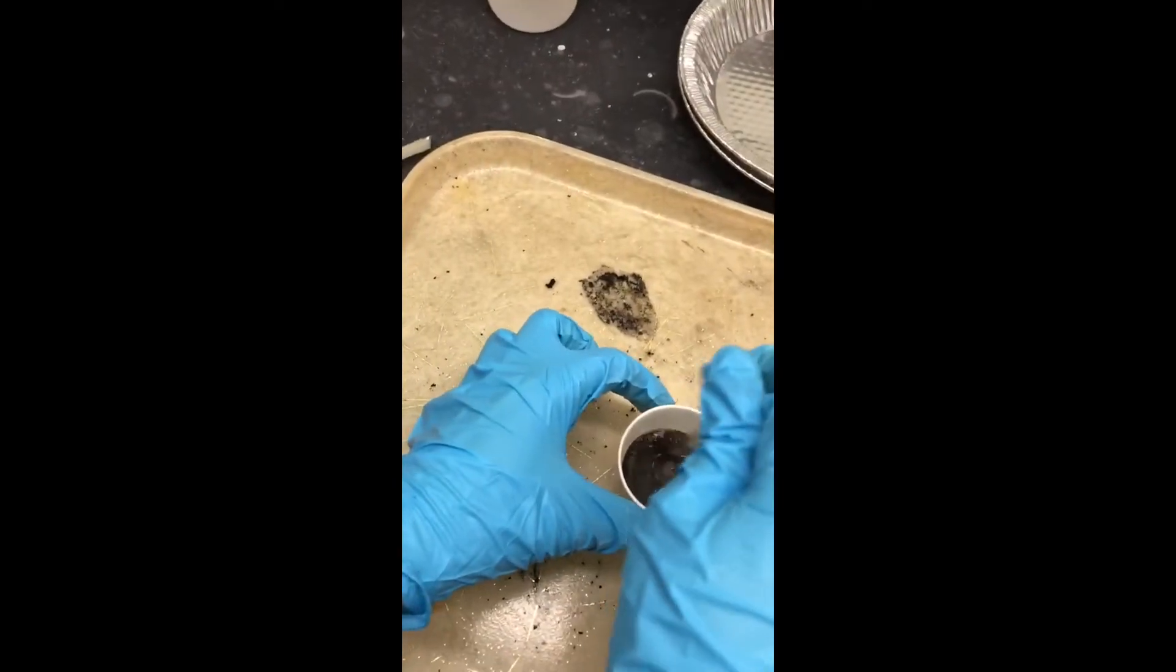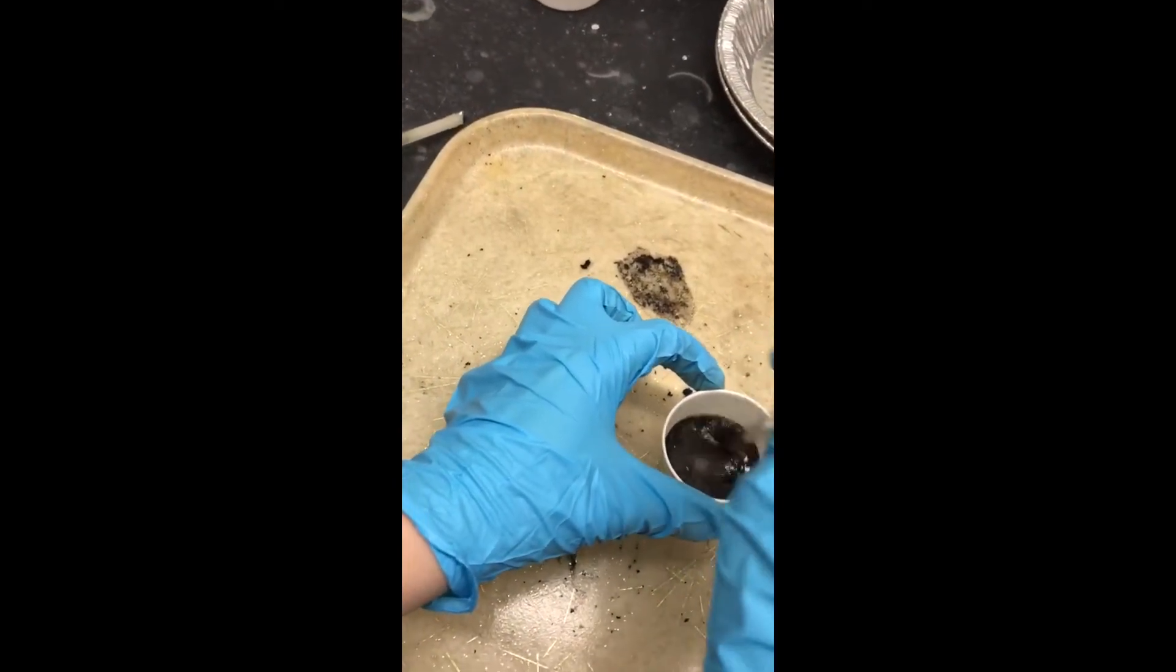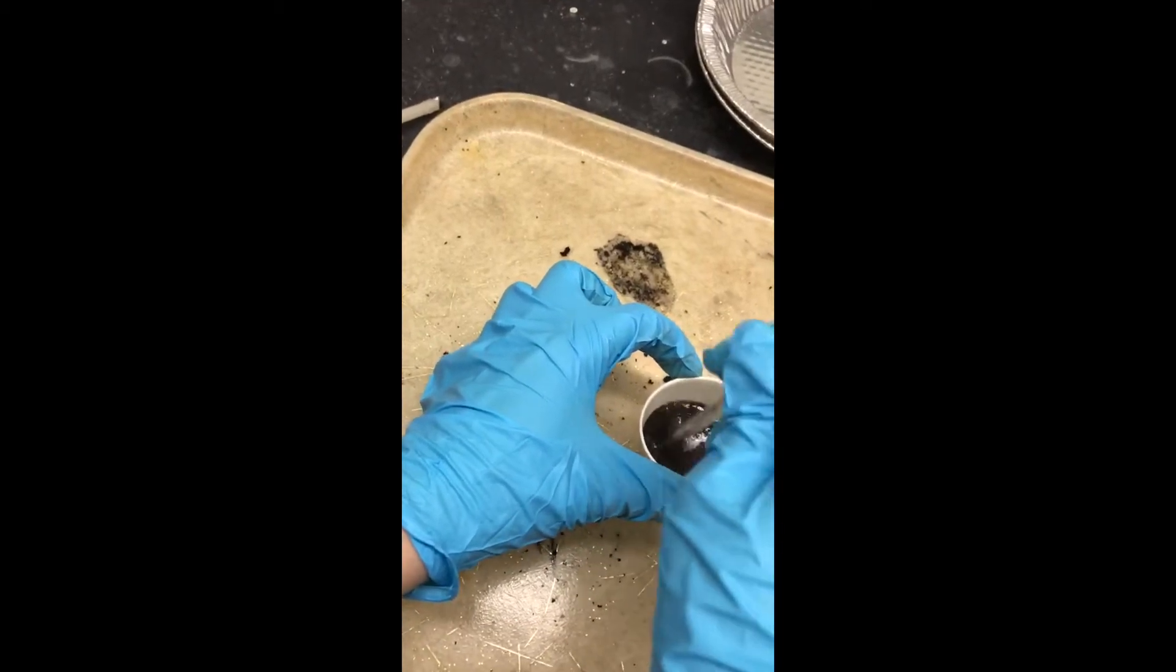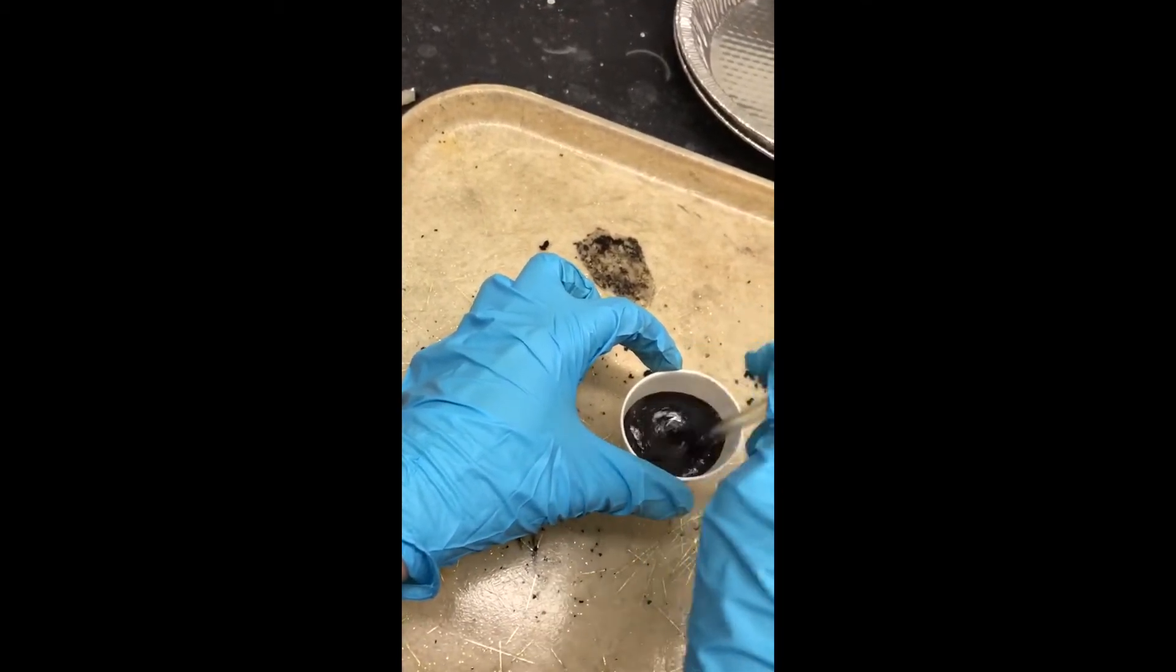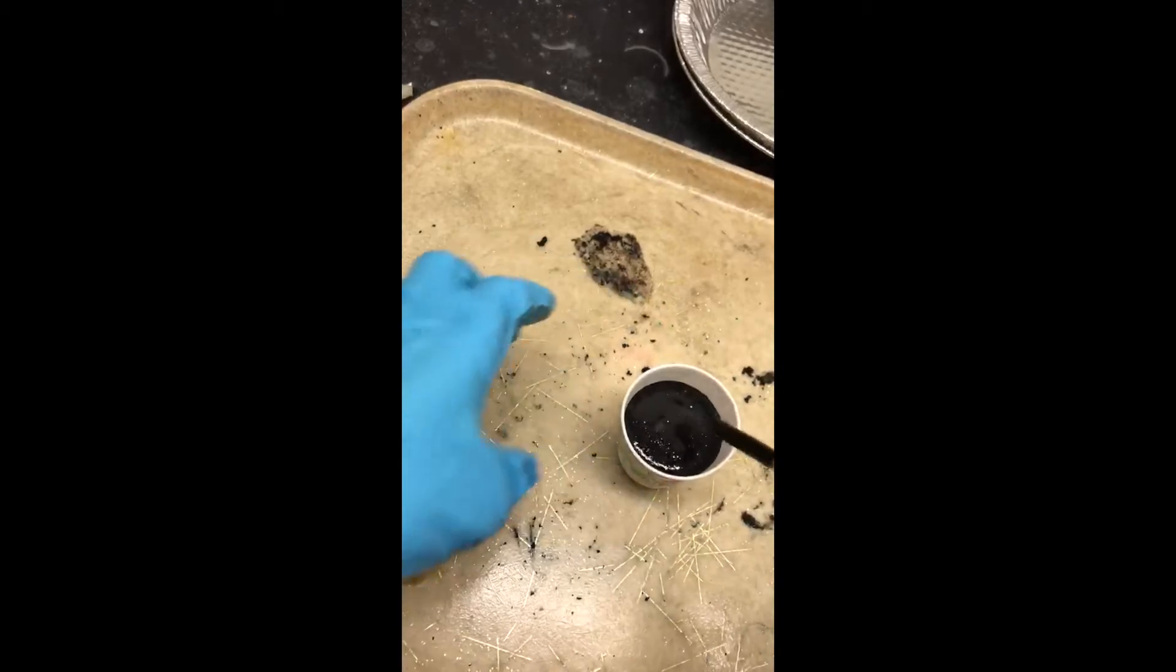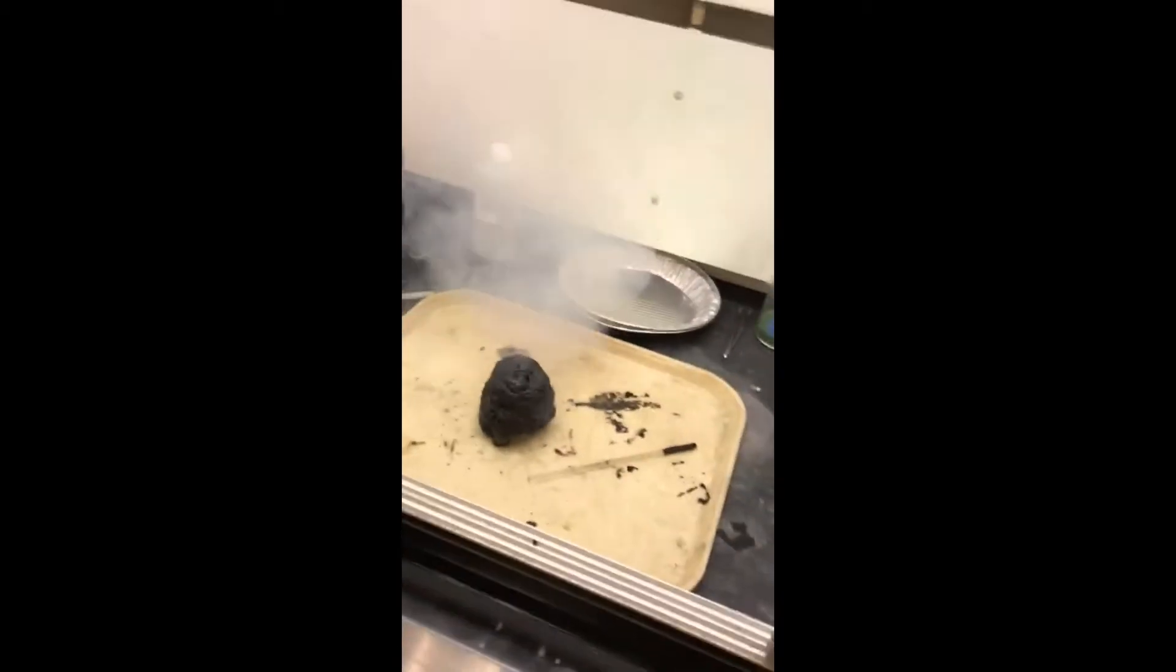In the final step of our experiment, making sure that the fume hood is on, we stir together the sugar and sulfuric acid to start the exothermic reaction. Once the solution starts to elevate, back up in order to avoid breathing in the toxic fumes.